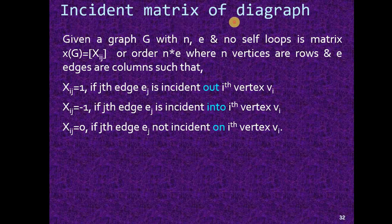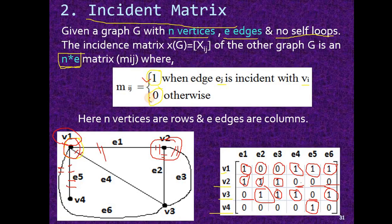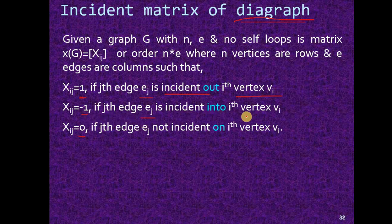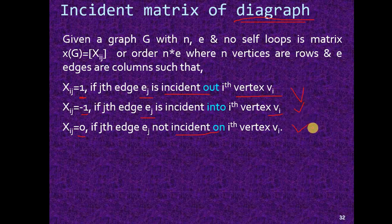Now we will see the incidence matrix of a digraph. In a simple undirected graph we have only two values: 1 and 0. But in a digraph, there are three values: 1, minus 1, and 0. We write 1 if edge ej is incident out of vertex vi (outgoing), minus 1 if edge ej is incident into vertex vi (incoming), and 0 if there is no incidence. I will explain the meaning of these three rules through an example.